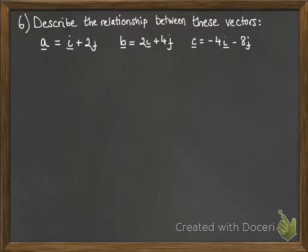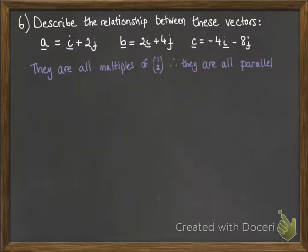Okay, now we've got three different vectors, and we're asked to describe the relationship between them. So we need to spot how they relate to each other in various different ways. So the first one we can see, they are all multiples of the same vector of one, two, or I plus two J if you like. Therefore they're all parallel.